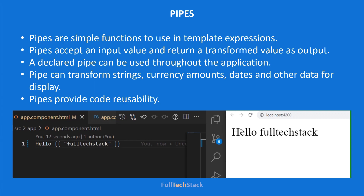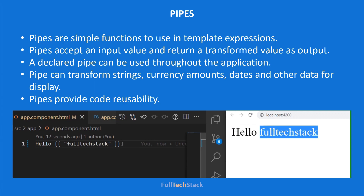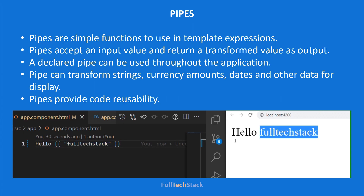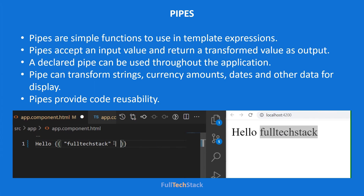Here we have a simple text 'hello' along with 'fulltext stack' as an expression. Now if we want to transform 'fulltext stack' to all uppercase, we have a built-in pipe — the uppercase pipe — for transforming the text. Here the text is now uppercased.